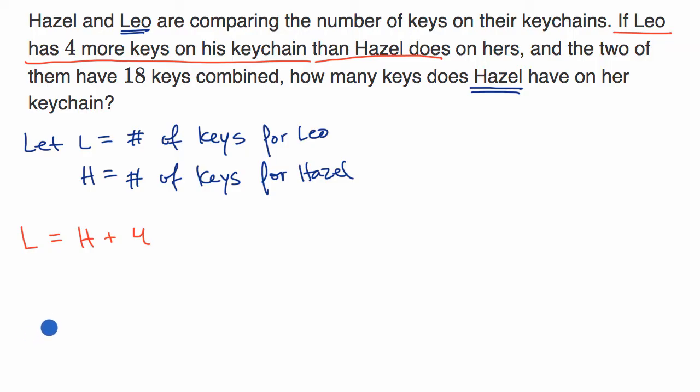We could also write that the difference between Leo's keys and Hazel's keys is four. So another alternative is L - H = 4. These are algebraically equivalent. It doesn't take much manipulation to go from one to the other.